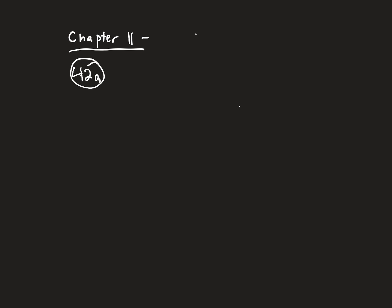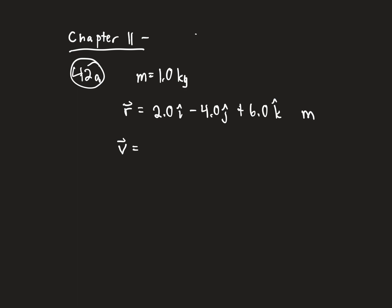Problem 42 part a: at a particular instance a one kilogram particle's position is given by the vector r = 2.0 î − 4.0 ĵ + 6.0 k̂ meters. Its velocity vector is v = −1.0 î + 4.0 ĵ + 1.0 k̂ meters per second.